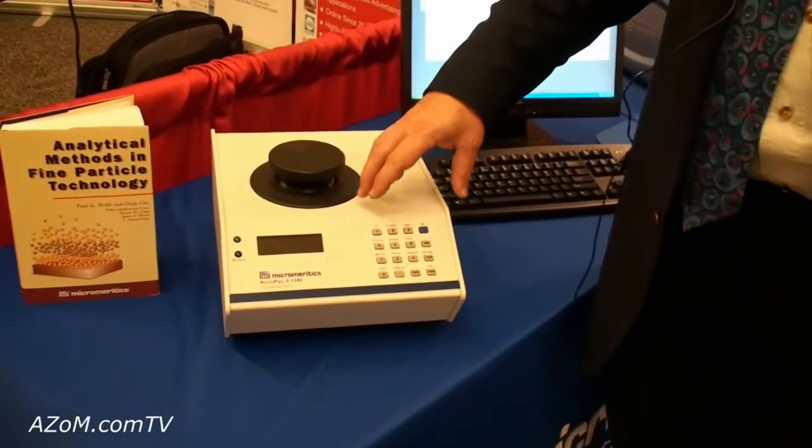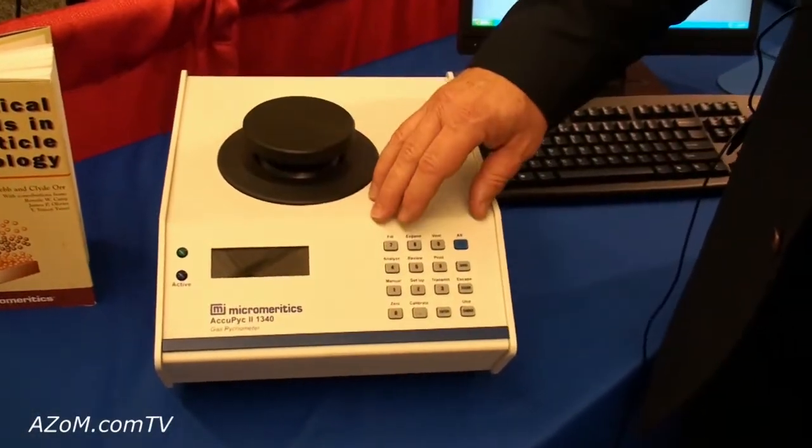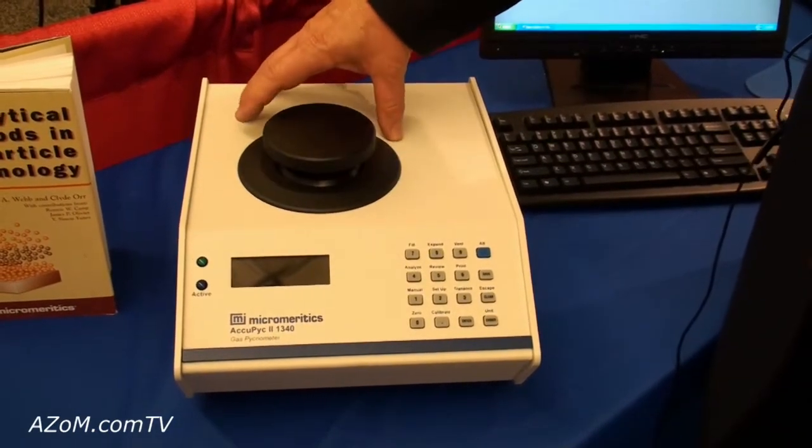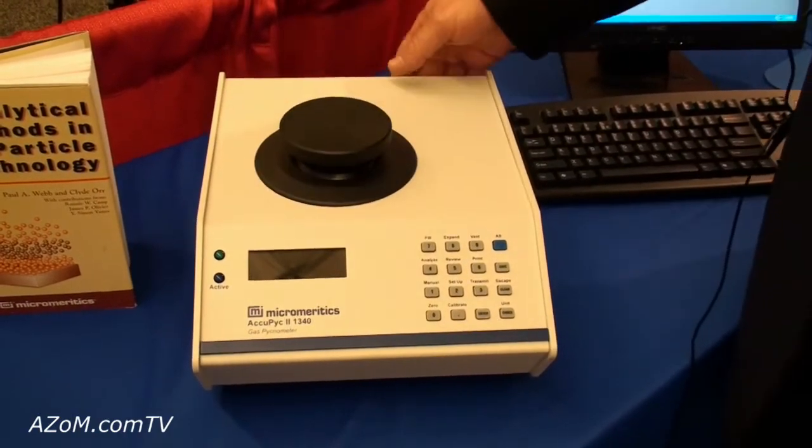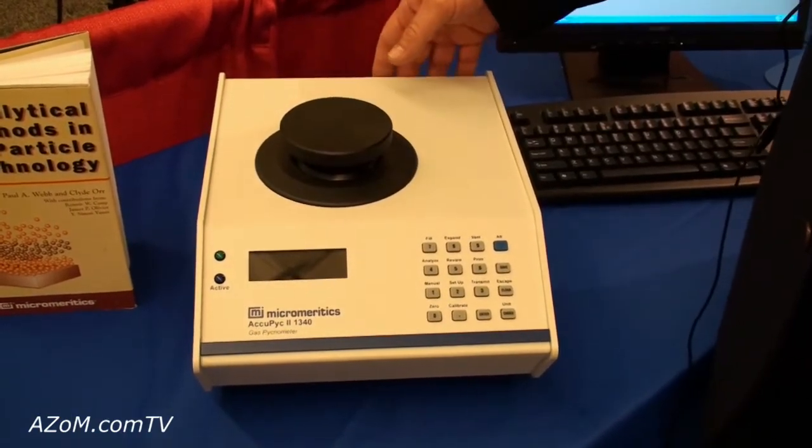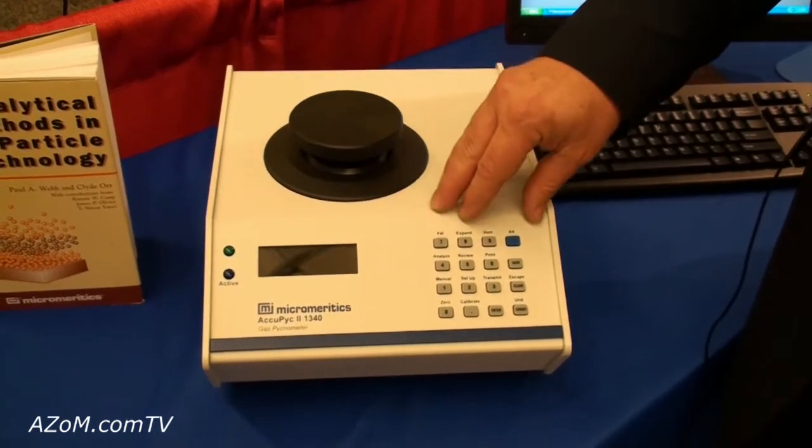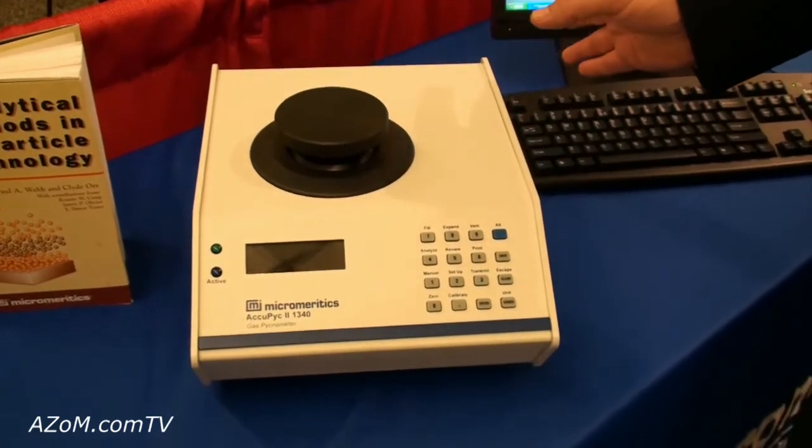Additionally, the ACUPIC instrument, this is the instrument with the built-in microprocessor, as I said. You can actually connect up to five additional analytical units, so it's about this big, to this unit so that you can have the throughput of six independent sample stations. Those can either be controlled from the pycnometer with the microprocessor or from the computer, from the PC.